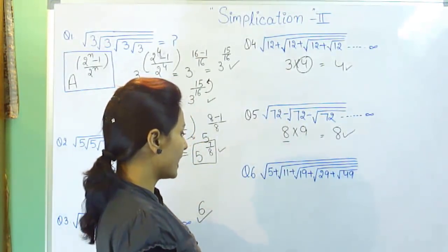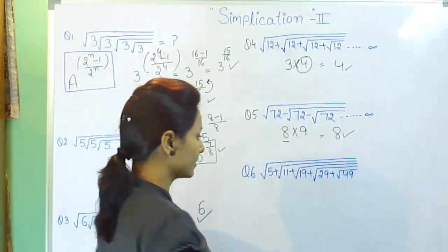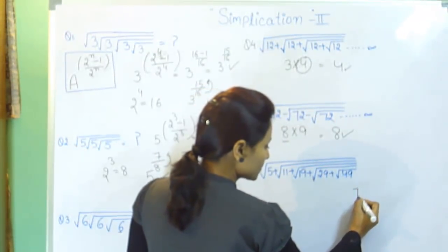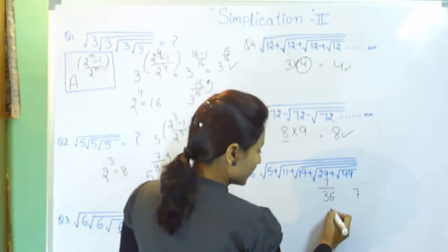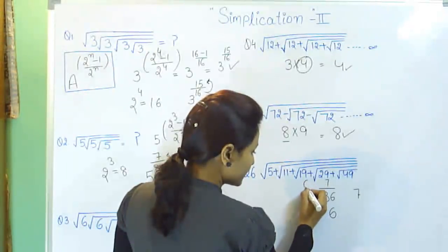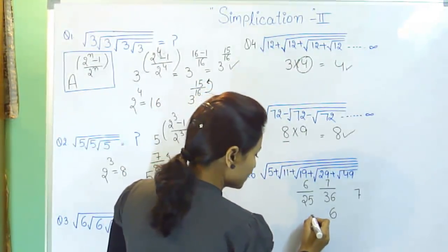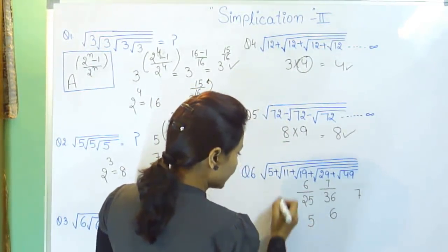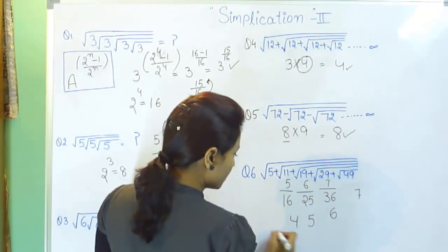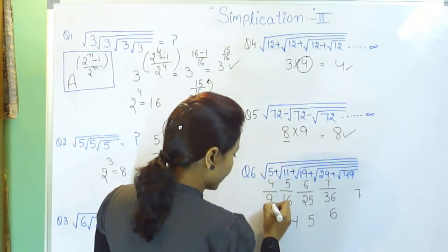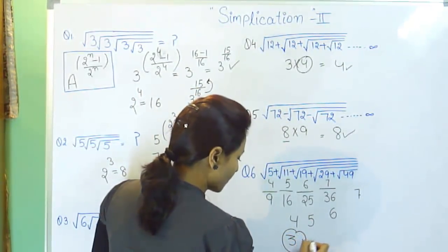The last question has different numbers, so we start from the innermost value. 49 is the perfect square of 7. Add 7 to 29 to get 36. 36 is the perfect square of 6. Add 6 to 19 to get 25, and 25 is the perfect square of 5. Add 5 to 11 to get 16, and 16 is the perfect square of 4. Add 4 to 5 to get 9, and 9 is the perfect square of 3. So 3 is the answer.